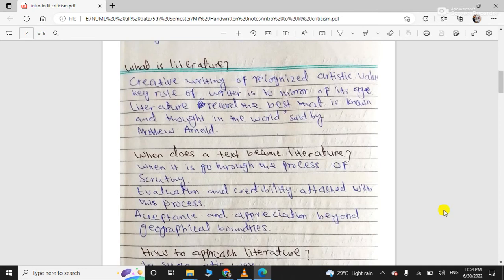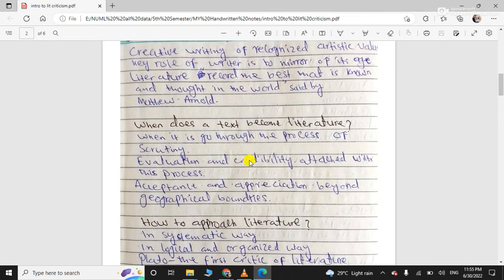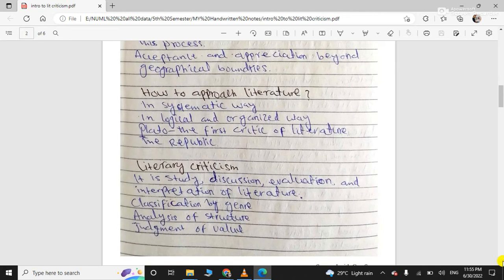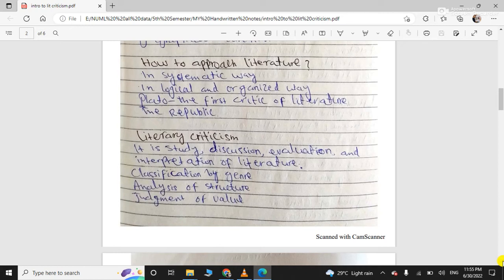Literature is creative writing that is recognized. A text becomes literature through a process of scrutiny and evaluation, then criticism, and then it becomes literature. How to approach literature? You have to approach it in a systematic, logical, and organized way.